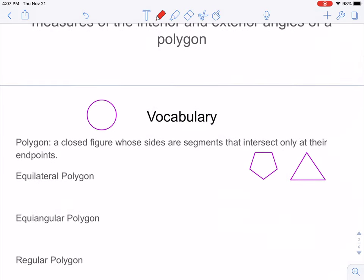Some of the things we're going to be talking about today involve equilateral or equiangular polygons. What do you think it means to be an equilateral polygon? How about an equiangular polygon?